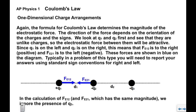Looking at Q1 and Q2, they are unlike, which means the force will be attractive or inward. Fe12 points to the right, Fe21 points to the left. Using the standard sign convention, Fe12 would be positive and Fe21 would be negative. Notice that we ignore Q3 while figuring out the force between 1 and 2.